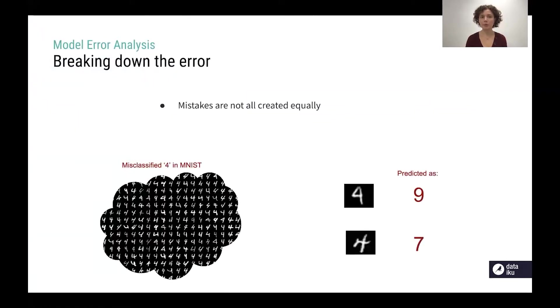The first key step behind model error analysis is to break down the error because there might be several reasons why a machine learning model is making mistakes and if we try to treat all the error as a whole it's actually quite difficult to make sense of it. If you imagine taking all the misclassified fours in the popular MNIST dataset for instance it's very difficult to understand what's going on there, but if you group the different predictions by predicted class you could make sense of the error. For instance some fours look like nine, some fours look like seven.